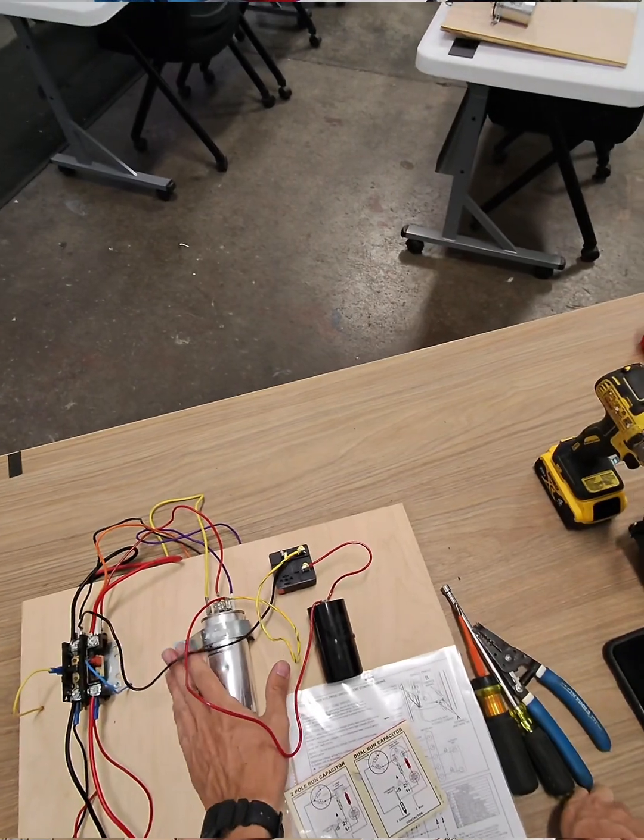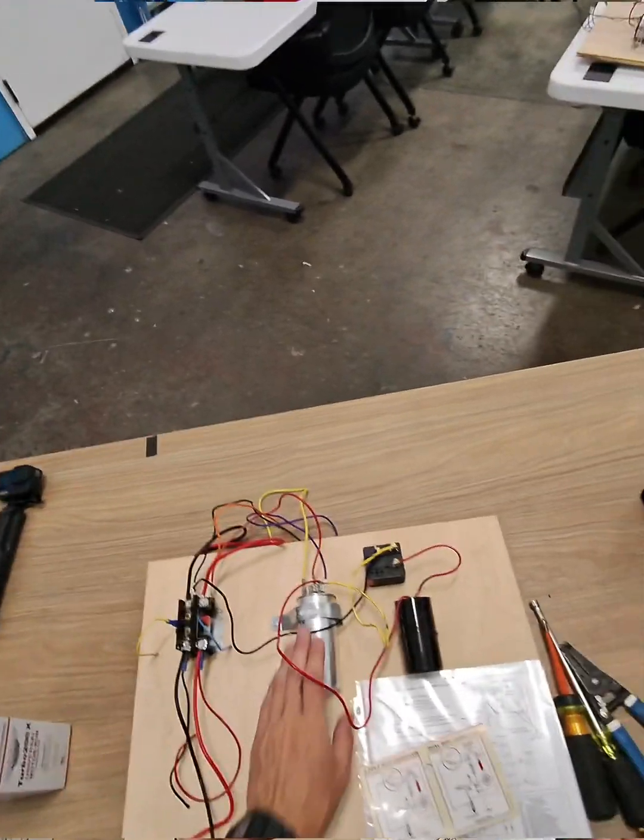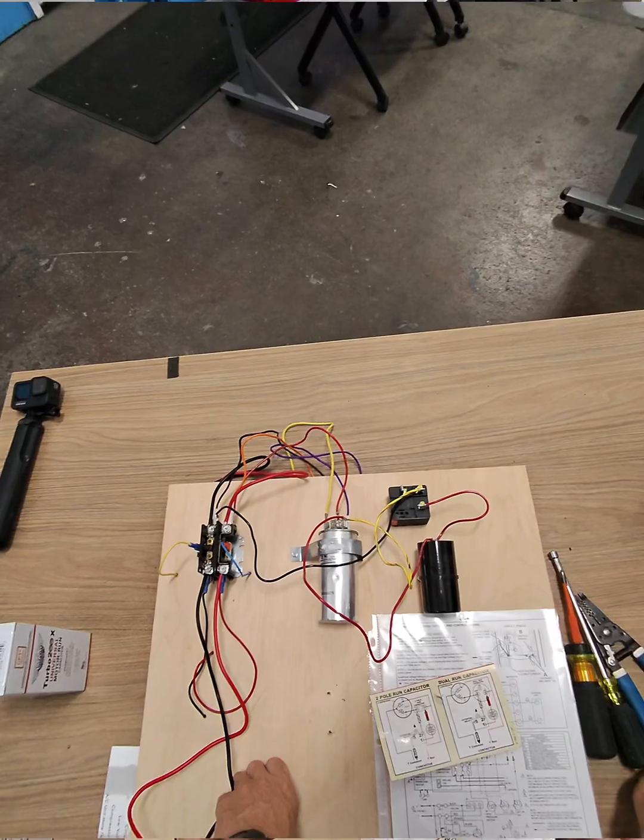What we're going to do from here is we'll take the dual-capacitor out, put a turbo-cap in its place, and rewire it, and see how we wire it up.